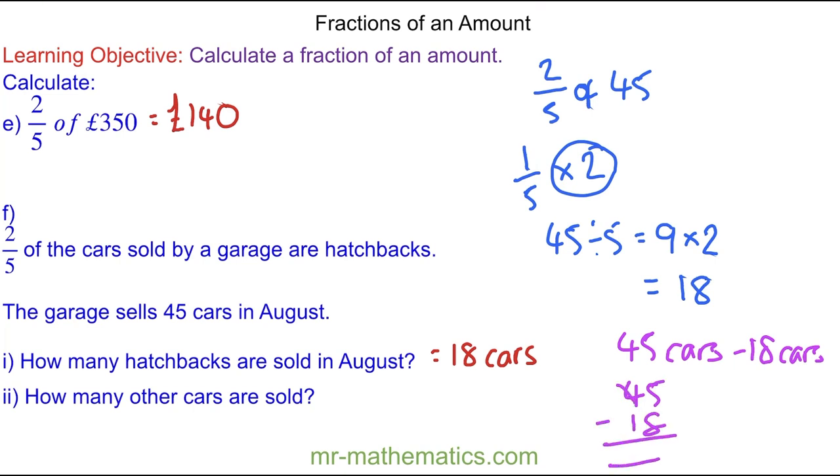Five take away eight you can't do so we borrow one. 15 take away eight is seven. And three take away one is two. So 27 cars were also sold, but not hatchbacks.